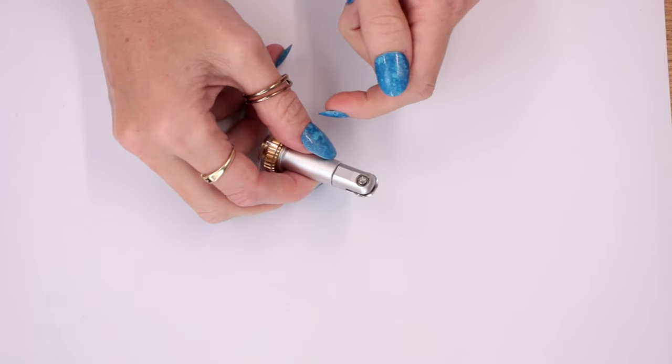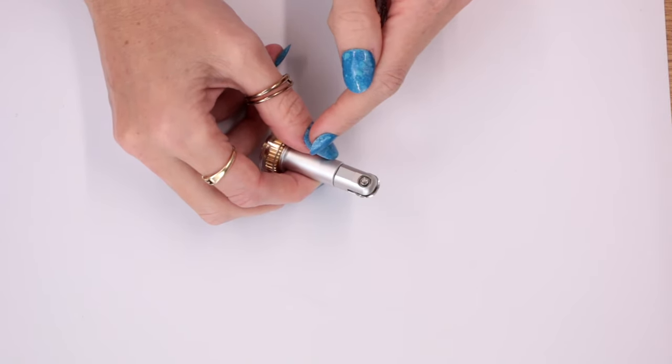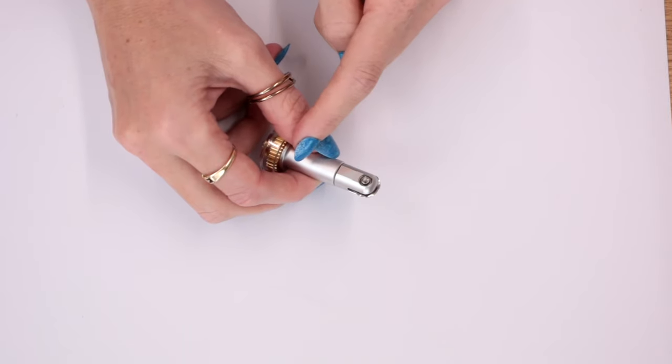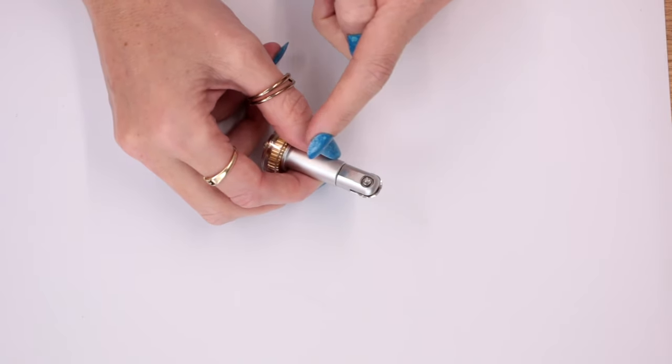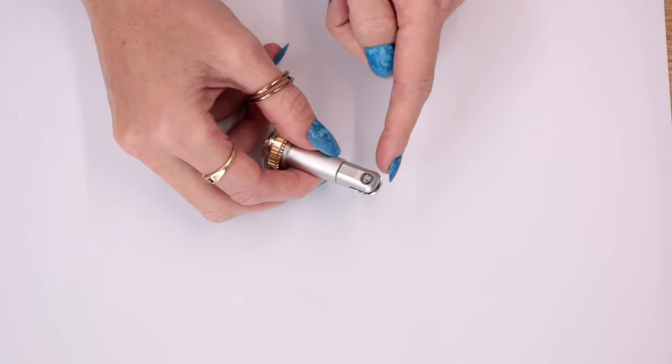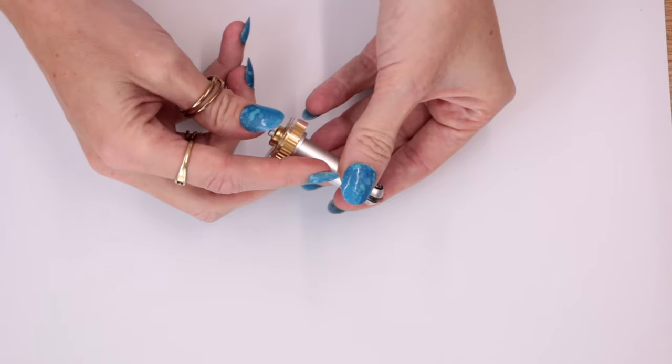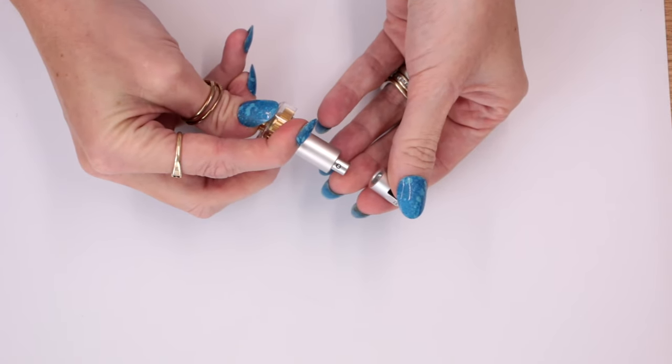So I've got the wavy blade here. It's just got a nice wave to it. Again, it's part of the quick swap housing, so if you've got your scoring wheel already, you'll have the quick swap housing, so that means you just need to get the tip. If you don't have the quick swap housing, you'll need to get the quick swap housing with the tip, but then once you have the quick swap housing, you can just get the rest of the tips on their own.